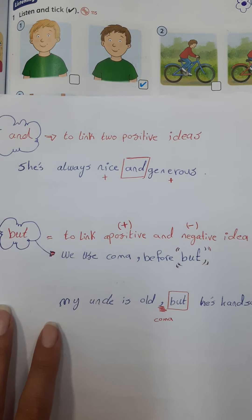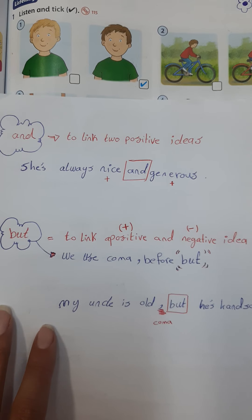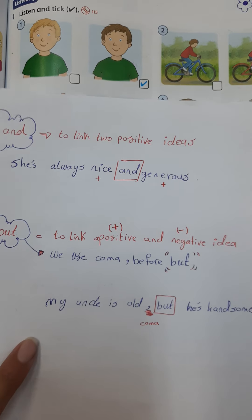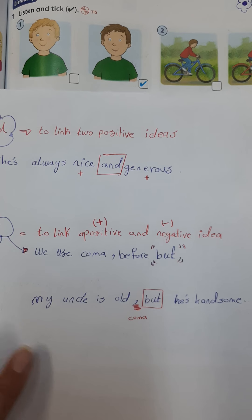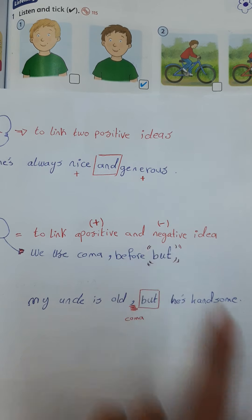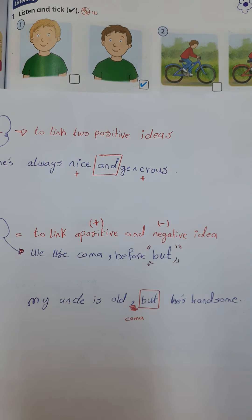Now let's go to 'but.' 'But' is used to link a positive and a negative idea — to connect two contrasting ideas. One idea is positive and the other is negative. The second idea is the opposite of the first.